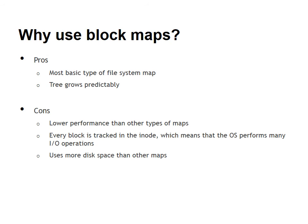Now that we understand what block maps are, should we use them? Let's look at the pros. First, it's the most basic and easiest to implement map. Another advantage is that the INODE grows predictably — low-level file blocks are always mapped to the INODE. The advantage is that when a file grows in size, the earlier block mapping information remains unchanged.